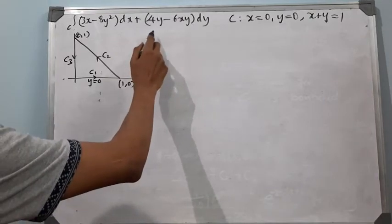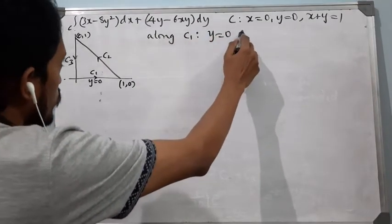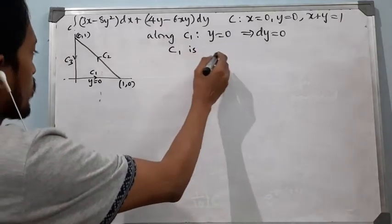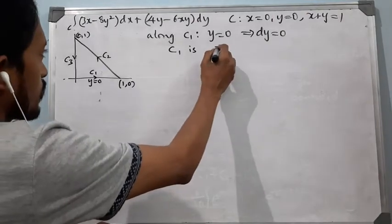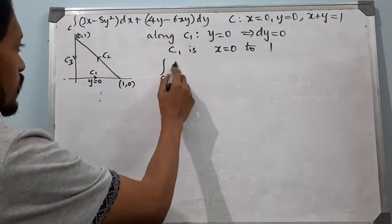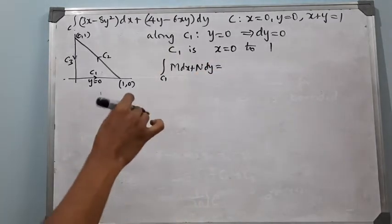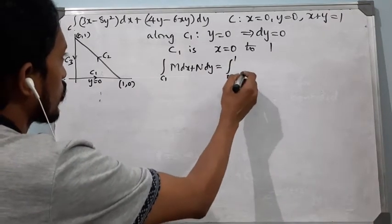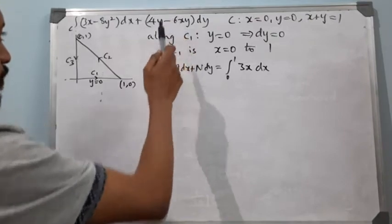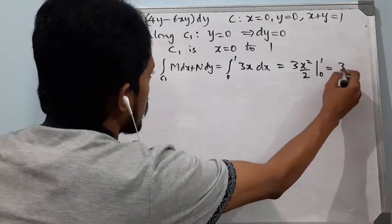Along C1, which is the x-axis, the equation is y = 0, which implies dy = 0. C1 goes from x = 0 to x = 1. Therefore, the integral along C1 of M dx + N dy equals the integral from 0 to 1 of 3x dx (substituting y = 0 and dy = 0). This gives 3x²/2 from 0 to 1, which equals 3/2.